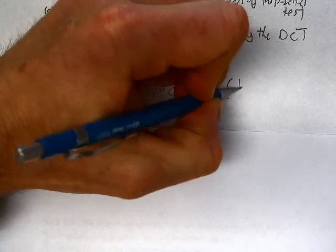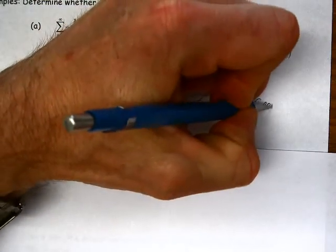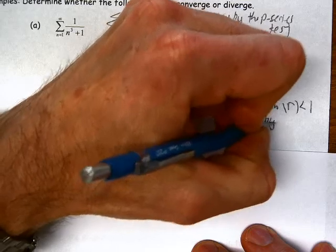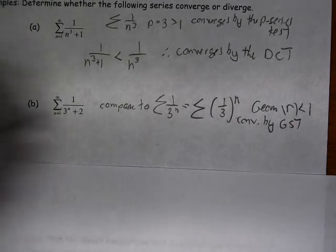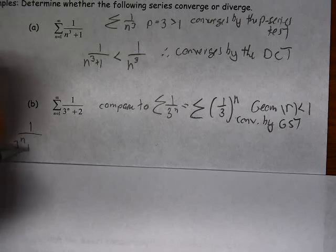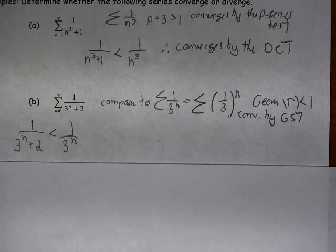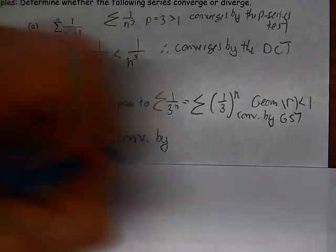I'm going to compare this to 1 over 3 to the n, which is really (1/3) to the n. This is a geometric series where r is less than 1, so it converges by the geometric series test. And I know that 1 over (3 to the n plus 2) is less than 1 over 3 to the n because I'm adding 2 to each denominator. So our series converges by the Direct Comparison Test.